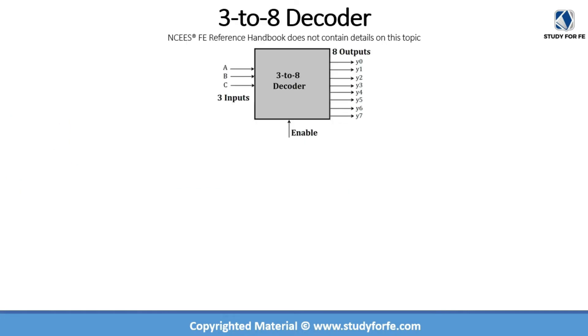Let us now take a look at a 3 to 8 decoder. A 3 to 8 decoder, as the name suggests, has three inputs. So we will call them a, b, and c. And it has eight outputs. We are going to call them y0, 1, 2, 3, 4, 5, 6, and 7. So three inputs and eight outputs because 2 raised to power 3 is equal to 8.